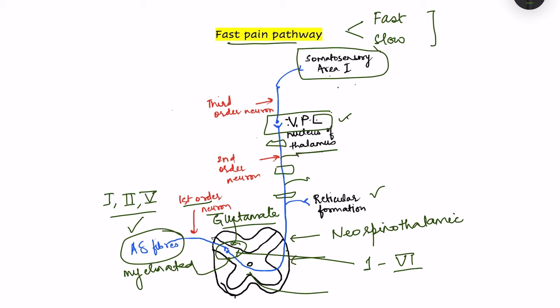The second order neuron gives some collaterals to the reticular formation, but very few branches arise; it directly reaches the VPL nucleus of the thalamus. From there, there is a localized projection to the somatosensory area, which is responsible for well localization of the site of pain, because there is point-to-point representation in the somatosensory area.